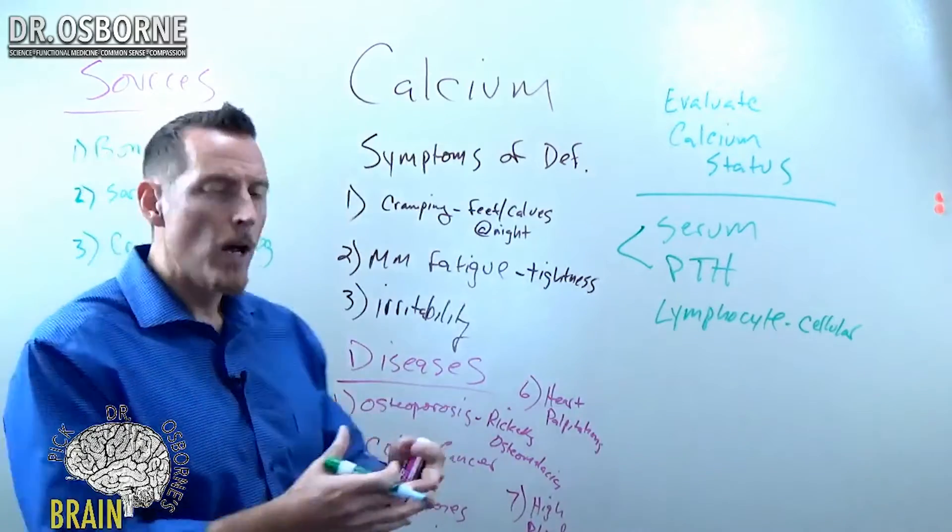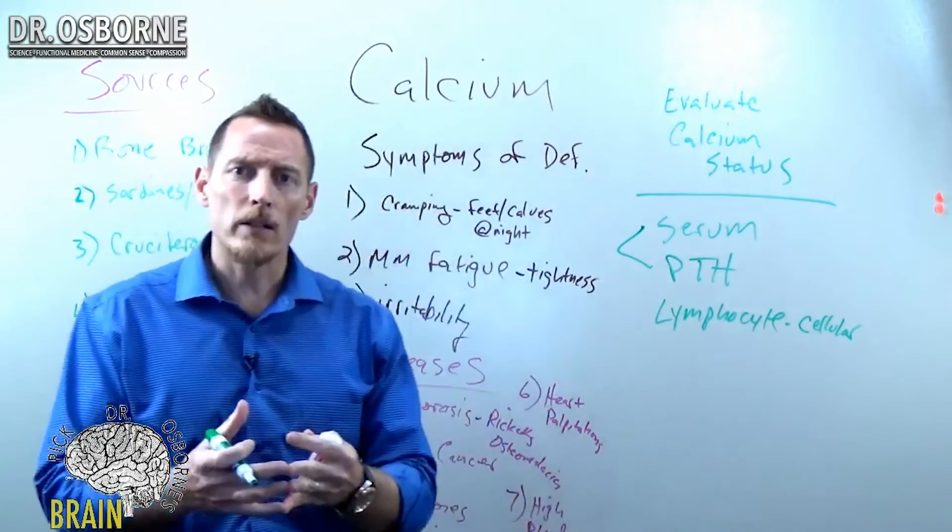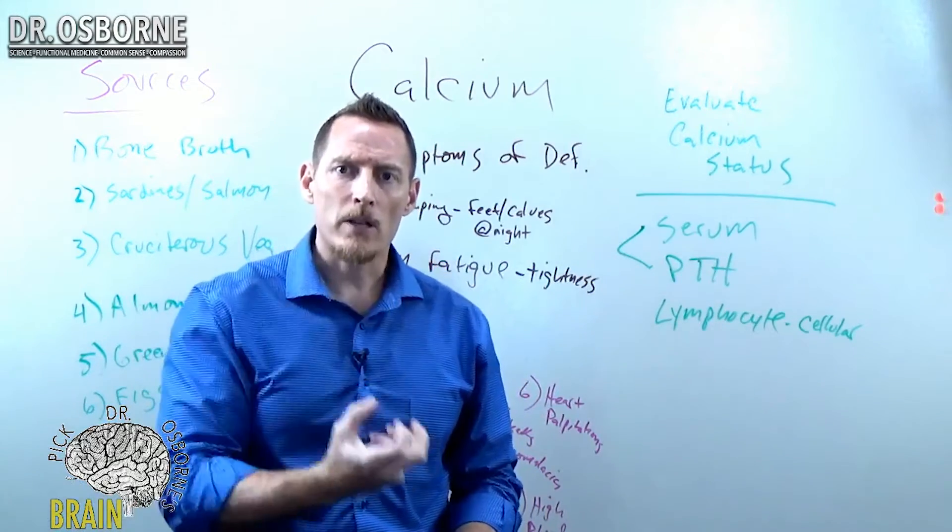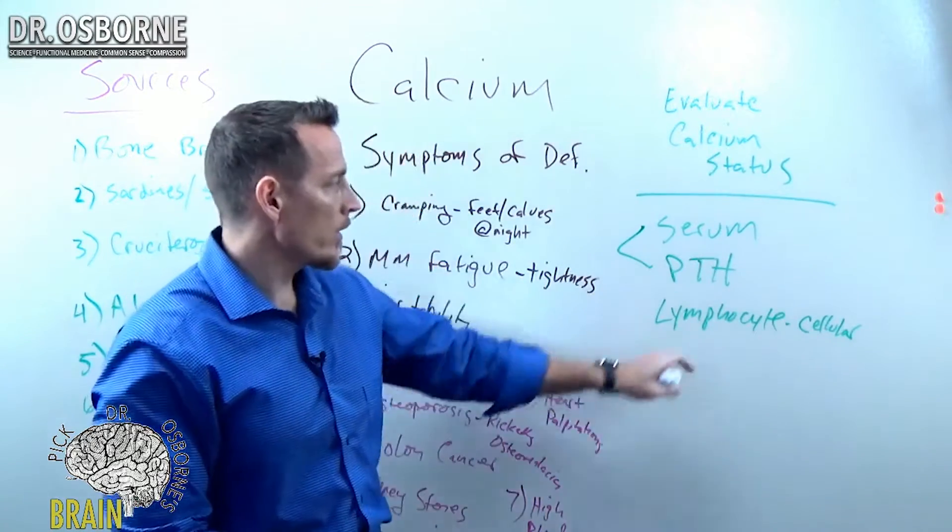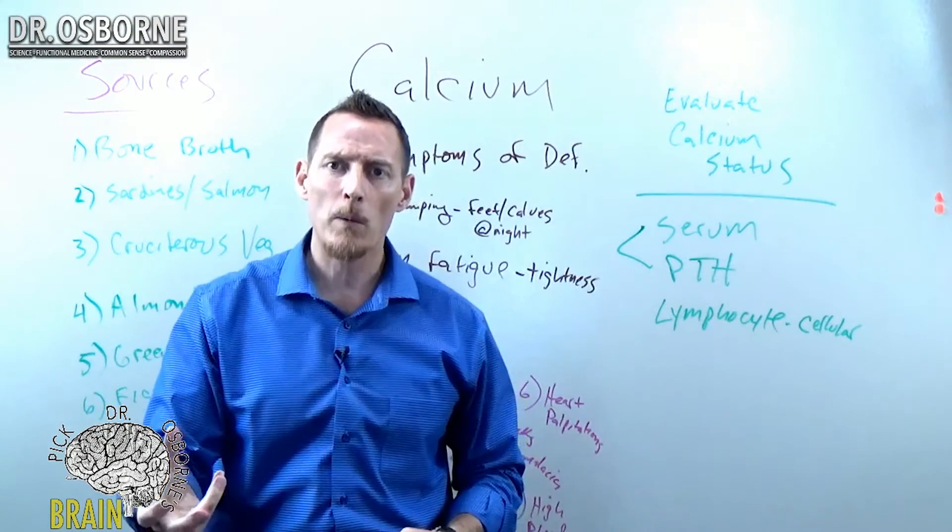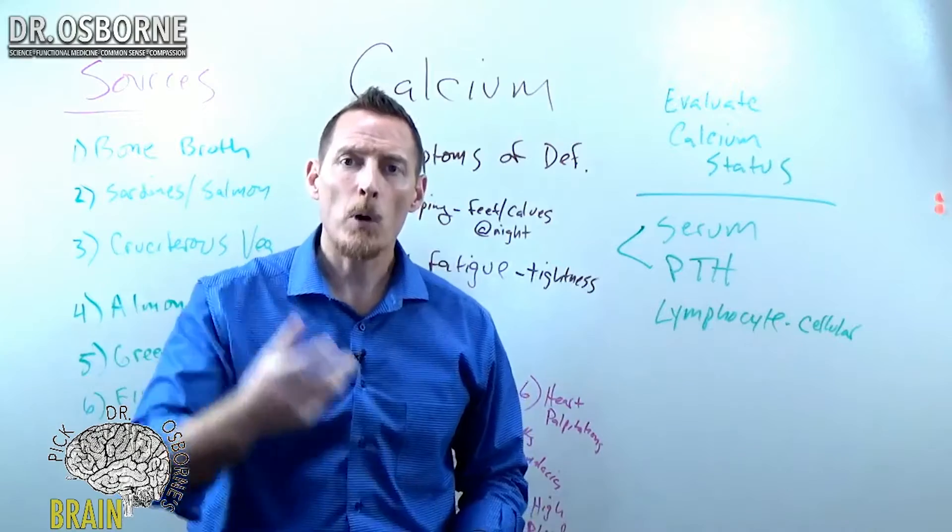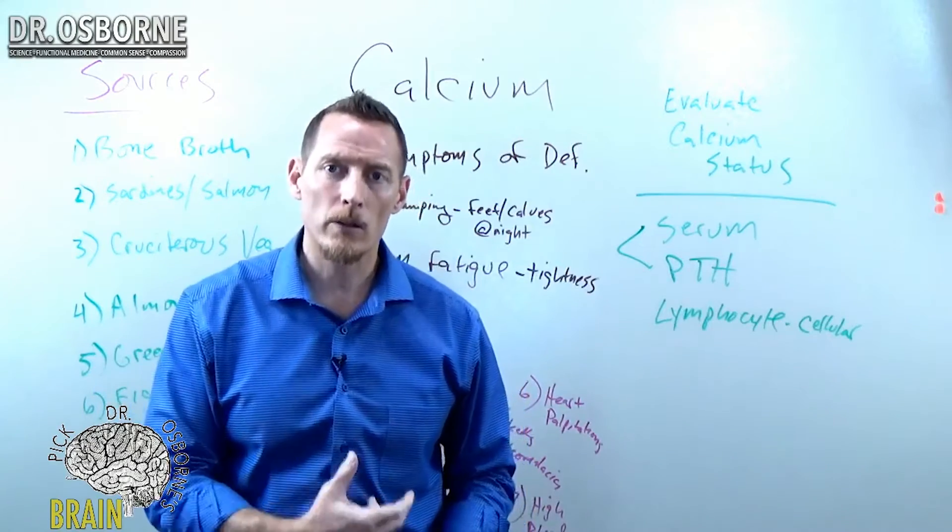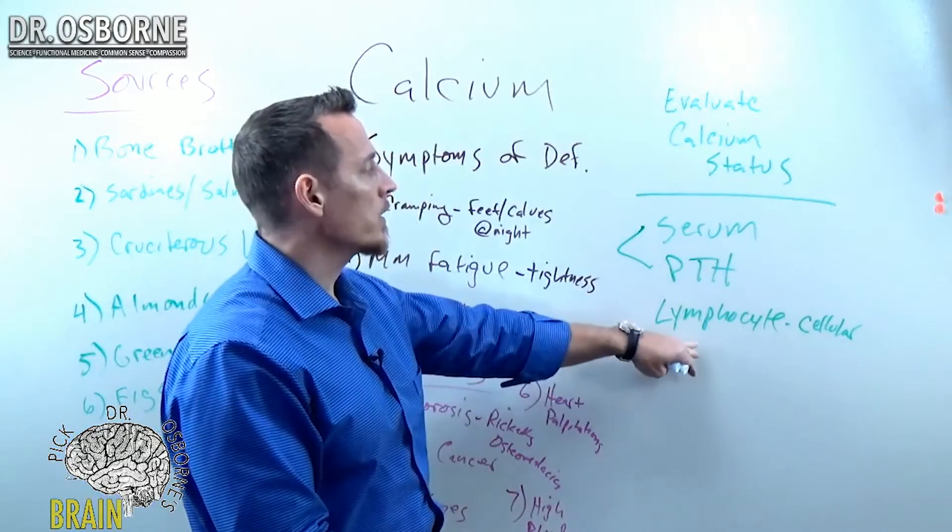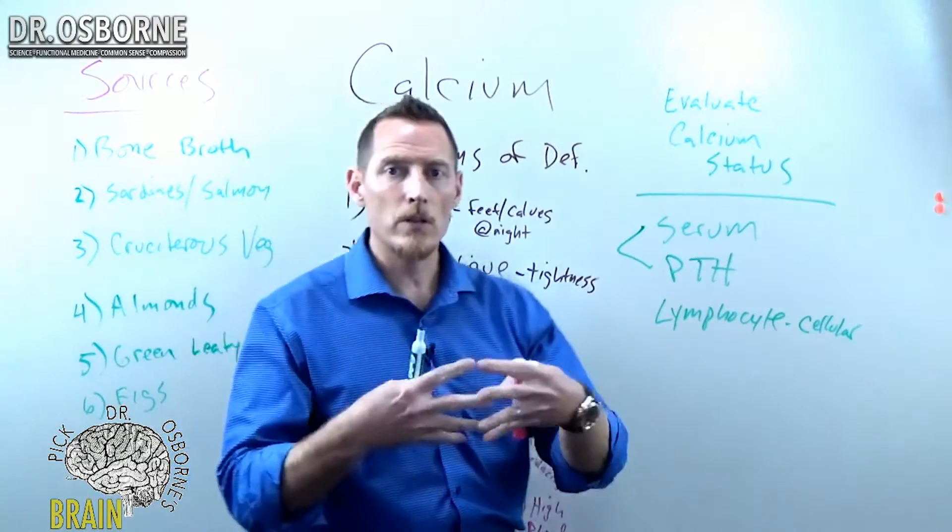Remember I was telling you earlier about some of the functions? One of those functions was as a secondary messenger. So calcium plays a role inside the cell. That's how your hormone messages get delivered. And so I want to know what's inside the cell because if a person has a hormone abnormality or a hormone problem, why wouldn't we want to know that? Because part of the way a hormone communicates to the cell is through calcium.